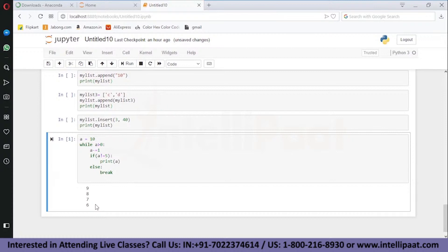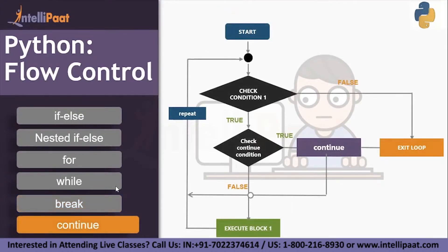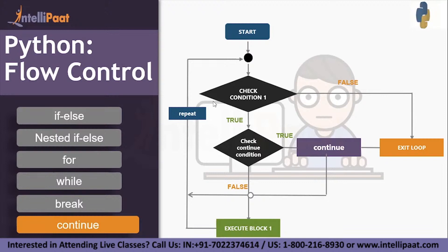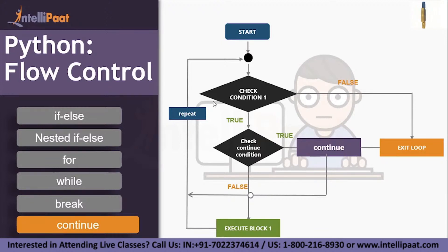Next we have the continue statement. The continue statement won't break the loop — it will just skip the current iteration's statement when the condition is true. In the flowchart: start, check condition one — if true, check the continue condition. If the continue condition is false, execute block one and repeat. If the continue condition is true, stop executing that particular block for that iteration and go back to repeat the loop.